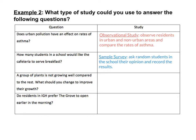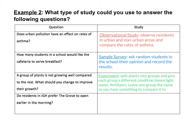The third question: a group of plants is not growing well compared to the rest — what should you change to improve their growth? This would best be analyzed using an experiment. You can split the plants into random groups and give each group a different condition, like more light, more water, or more fertilizer. Make sure you leave one group the same so you have something to compare it to. Remember, with an experiment you always need a control group.